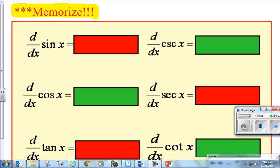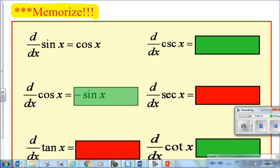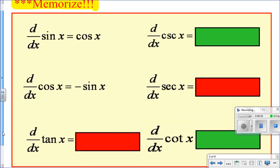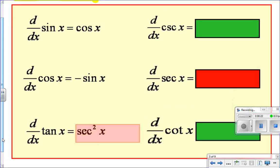Okay, so these you're just going to have to memorize. Cosine is the derivative of sine. The derivative of cosine is negative sine. What's the derivative of tangent? Any guesses? Secant squared.